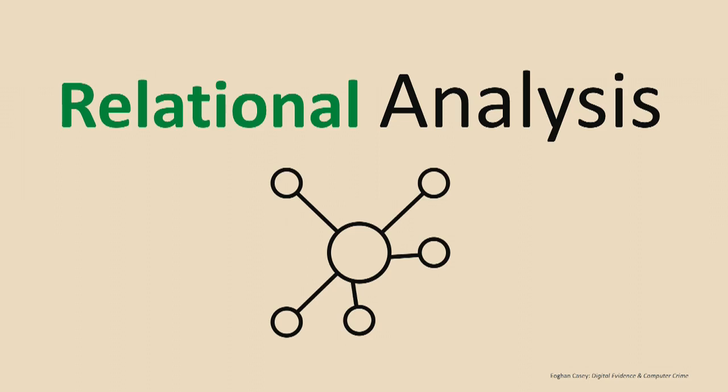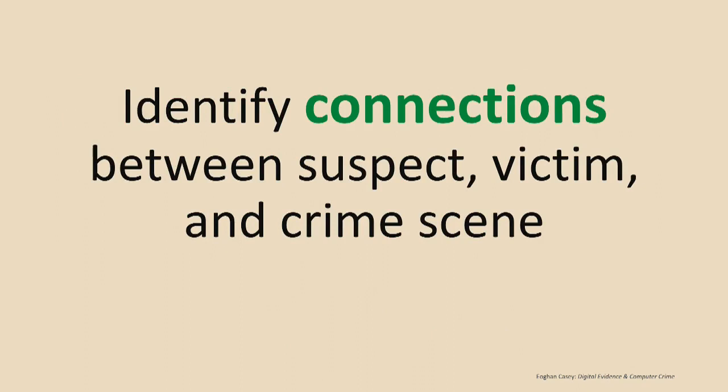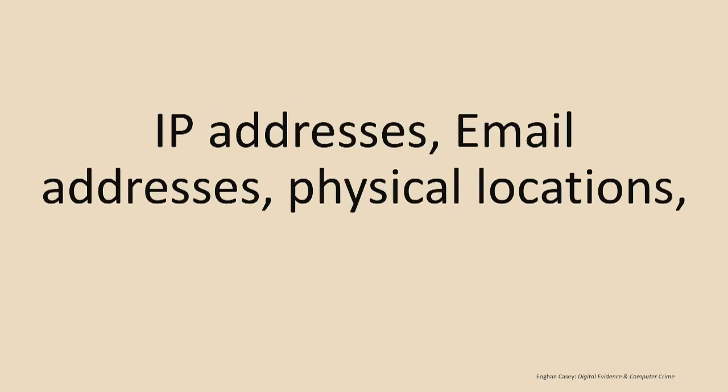How things are connected — how people are connected, how devices are connected. How things are related. You could have different devices, different artifacts such as an email. You want to try to identify the connections between the suspect, the victim, and the scene. Maybe a key part of your analysis is trying to put somebody someplace at a certain time, or connect someone to another person, or to a specific file. We do that on the digital side through IP addresses, email addresses, physical locations.